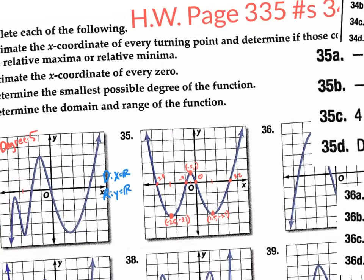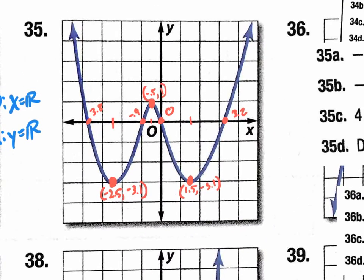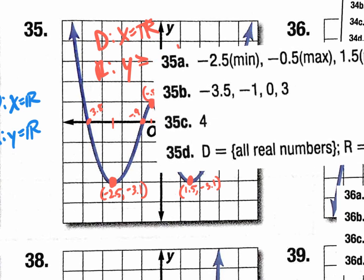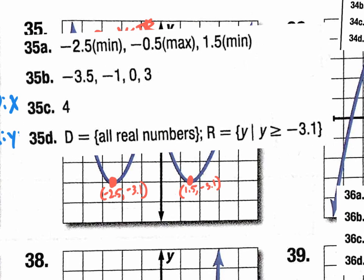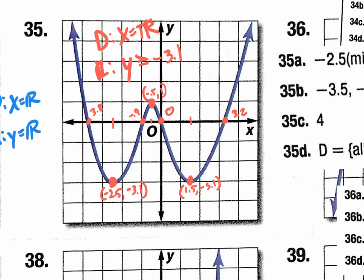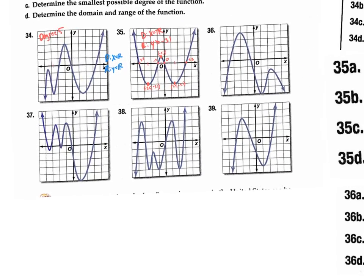Last but not least, the domain and range for number 35. The domain is x equals all real numbers — it goes left and right forever even though the ends go up. The range: does this go up forever? Yes. Does it go down forever? No. So the range is y is greater than or equal to negative 3.1. We're going to spend the rest of this period doing problems 36 through 39.